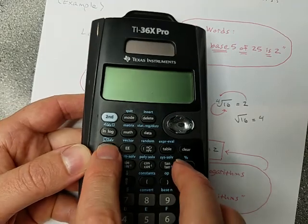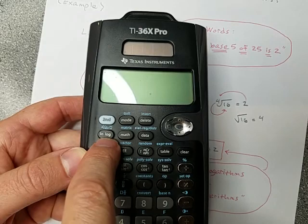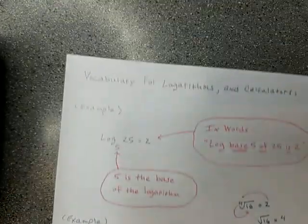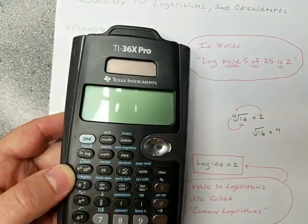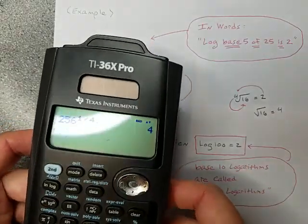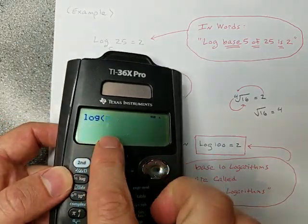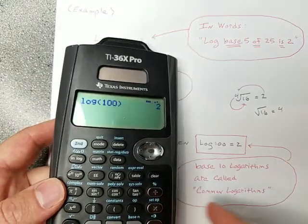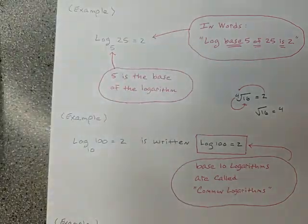As we start using our calculator, find the button that says 'log' — that's base 10. Let's verify: log base 10 of 100. I press log, type 100, and it gives me 2. Yes, that's correct. So I can calculate a common logarithm using that key.